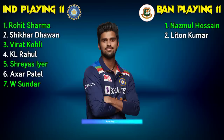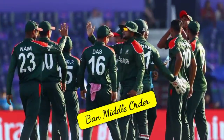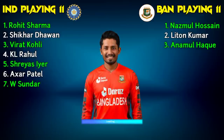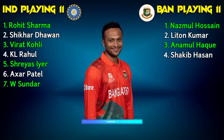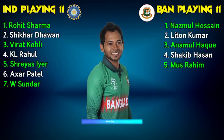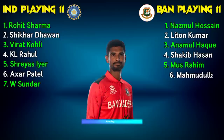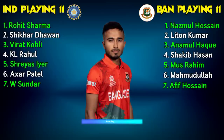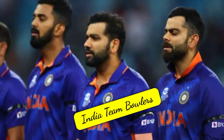Bangladesh team Middle Order — Number 3: Inamul Haque Bijoy, right-hand batsman. Number 4: Shakib Al Hasan, All-Rounder. Number 5: Mushfiqur Rahim, Wicket Keeper batsman. Number 6: Mahmudullah Riad, Batting All-Rounder. Number 7: Afif Hossain, All-Rounder.